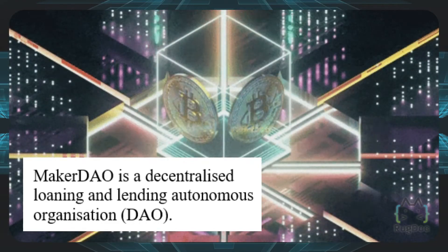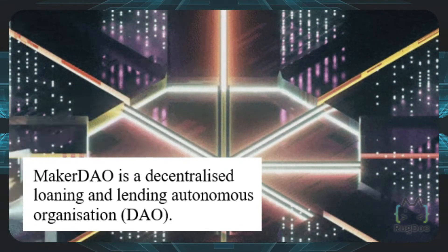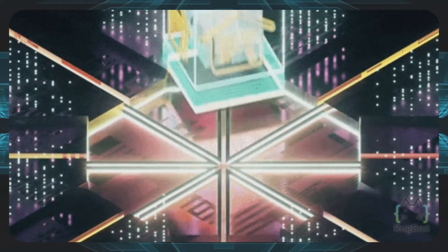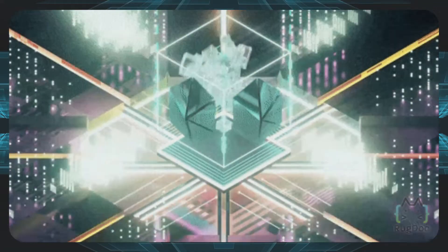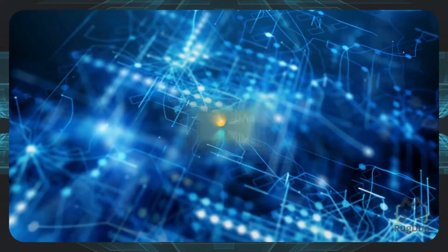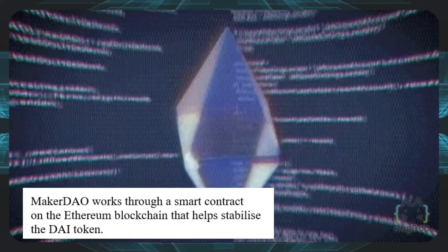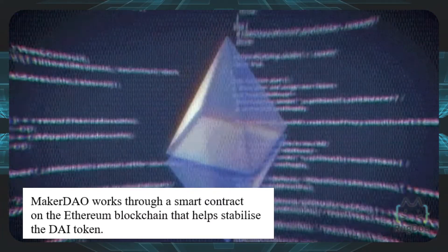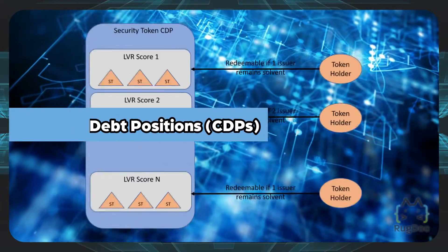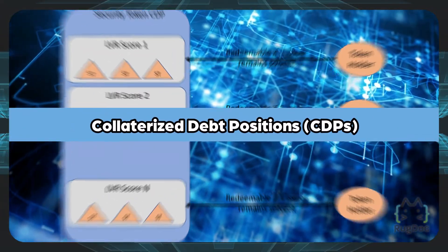In a nutshell, MakerDAO is a decentralized loaning and lending autonomous organization. It's built on the Ethereum blockchain and makes use of two native tokens, namely Maker and DAI. MakerDAO works through a smart contract on the Ethereum blockchain that helps stabilize the DAI token. The system used for this is called Collateralized Debt Positions, or CDP.